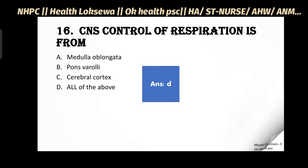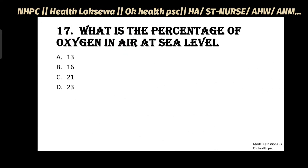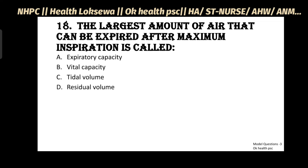Question No.17: What is the percentage of oxygen in air at sea level? Answer: 21%. The percentage of oxygen in air at sea level is 21%.